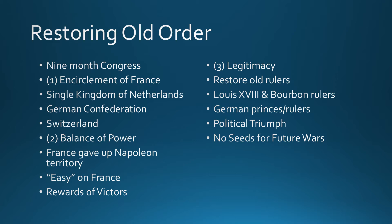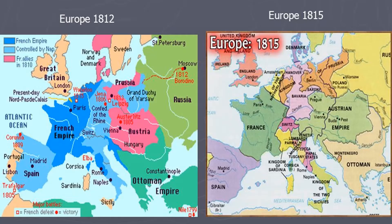New political philosophies emerge as a result of the revolution, largely based on thoughts from the French Revolution. These maps show what Europe looks like before the Congress of Vienna in 1812 and after in 1815 — big changes occurring, the French Empire is no longer, just France. The Netherlands is right next to it as a power check. The boundary of the German Confederation is visible — not a unified Germany yet, but the German Confederation of states that will later become one unified place.